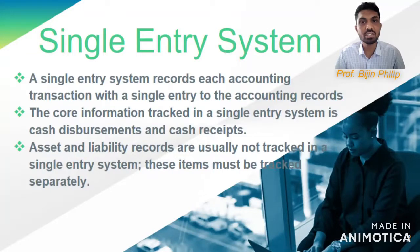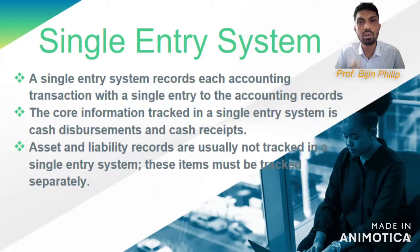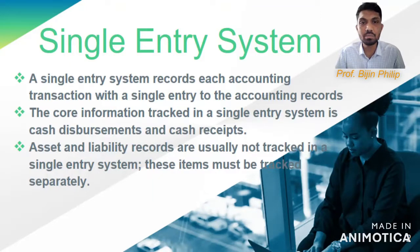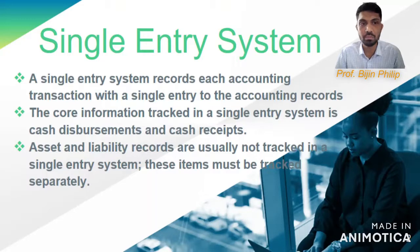The first effect in double entry is called the debit aspect and the second one is the credit aspect. But coming to the single entry system, each accounting transaction will have only one effect.